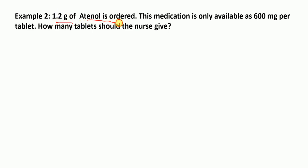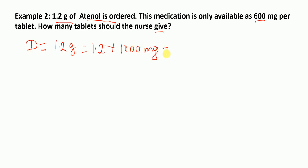The next example: 1.2 grams of atenolol is ordered. This medication is only available as 600 mg per tablet. How many tablets should the nurse give? The amount desired (D) is 1.2 grams. Since the amount on hand is in milligrams, we must convert: 1.2 grams equals 1.2 times 1000, which is 1200 mg. The amount on hand (H) equals 600 mg.